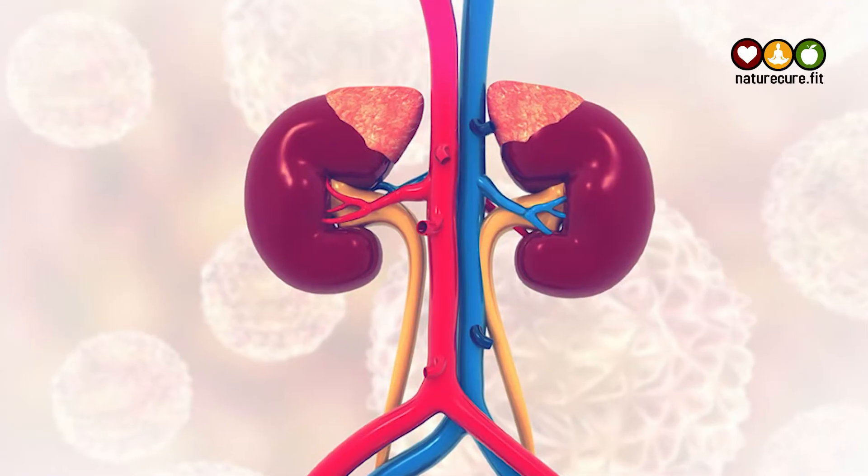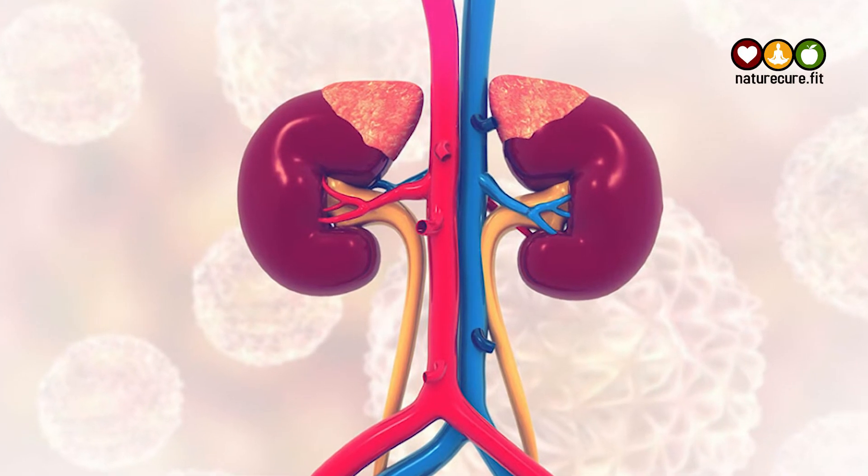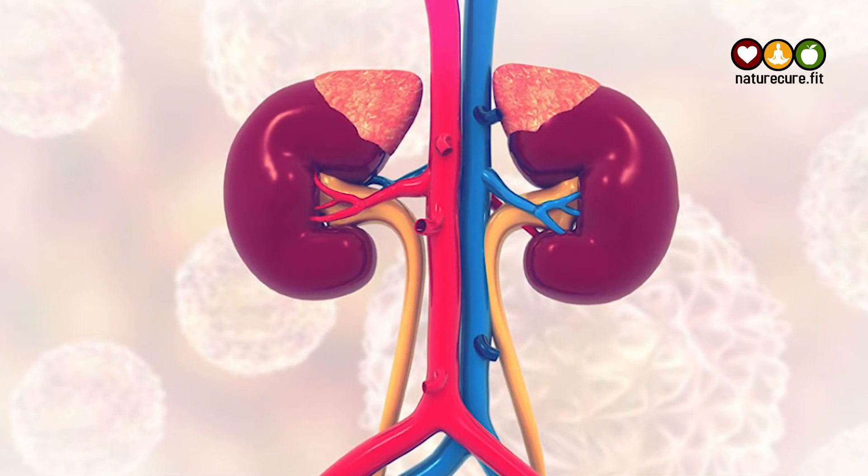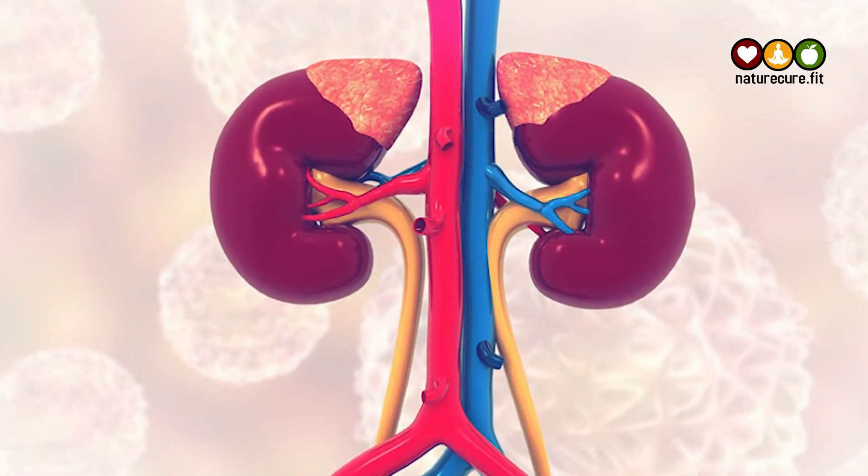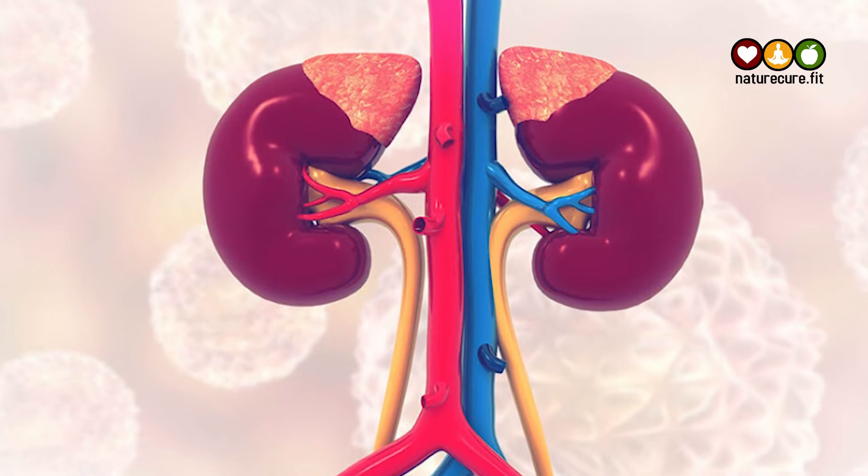When the nephrons get damaged, your filtration rate of the kidney is gradually affected and your kidney will get damaged. You have to notice this very early, and you have to control and reverse your diabetes as well.